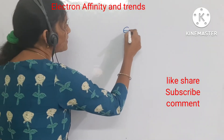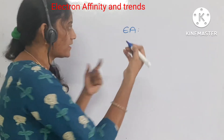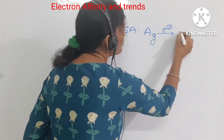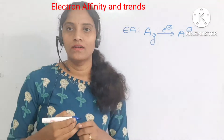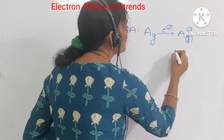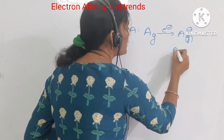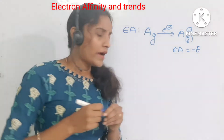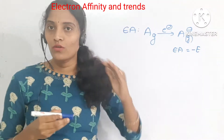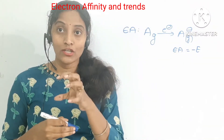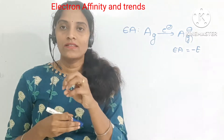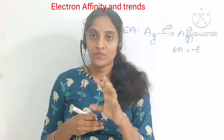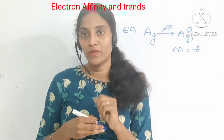Electron affinity is indicated with Ea. Suppose you take one gaseous atom — A is a gaseous atom — and you are going to add one electron, then it will become A minus, a gaseous ion. The energy change for this electron affinity will be negative energy. It is always an exothermic reaction. While adding an electron to the outer shell of an atom, the energy will be released outside, so it is always indicated with negative energy.